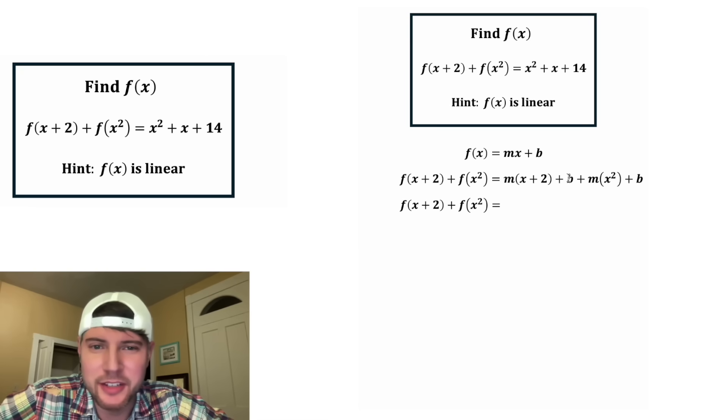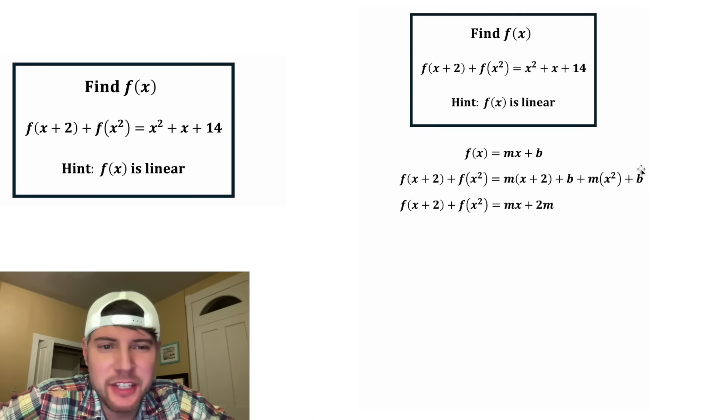We can do some work on this. This m can distribute to both of these terms: m times x is mx, and m times 2 is 2m. And then next, we can combine this b plus this b to give us 2b.